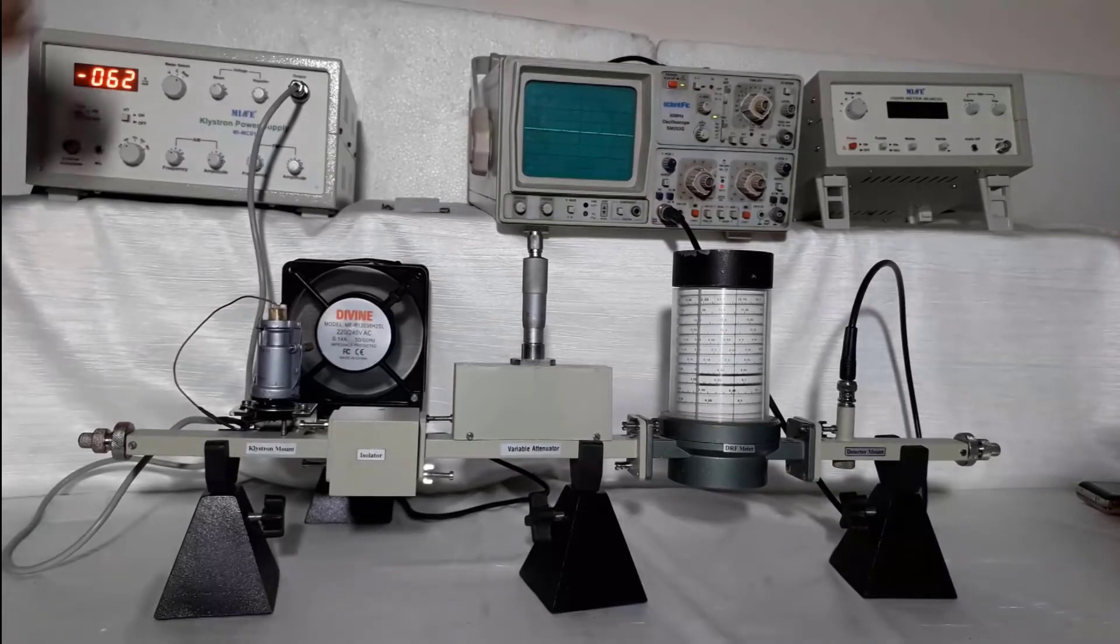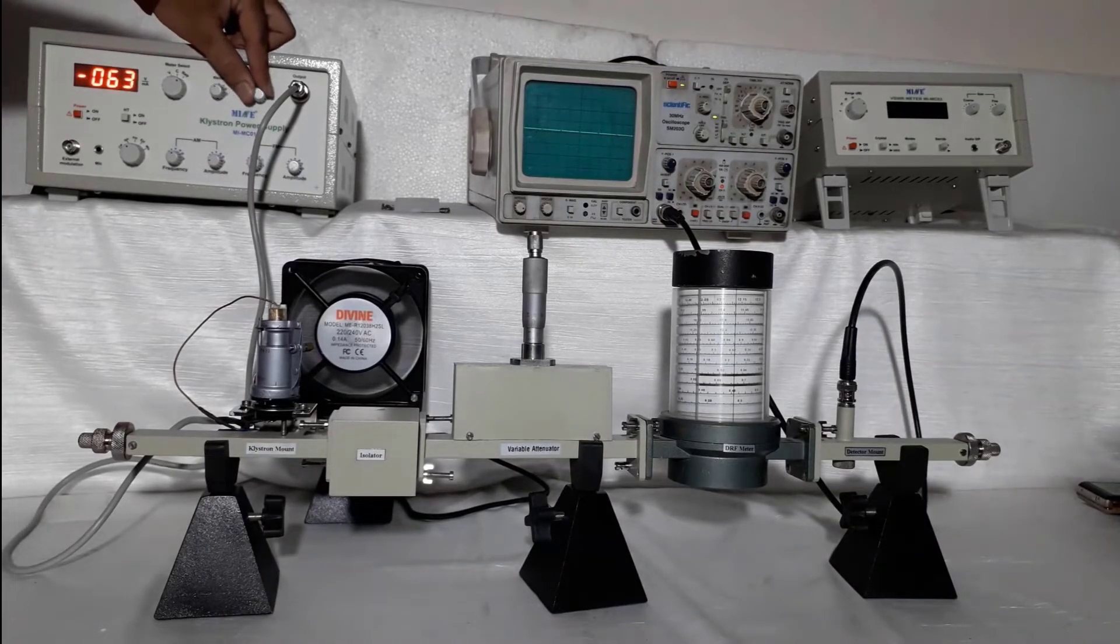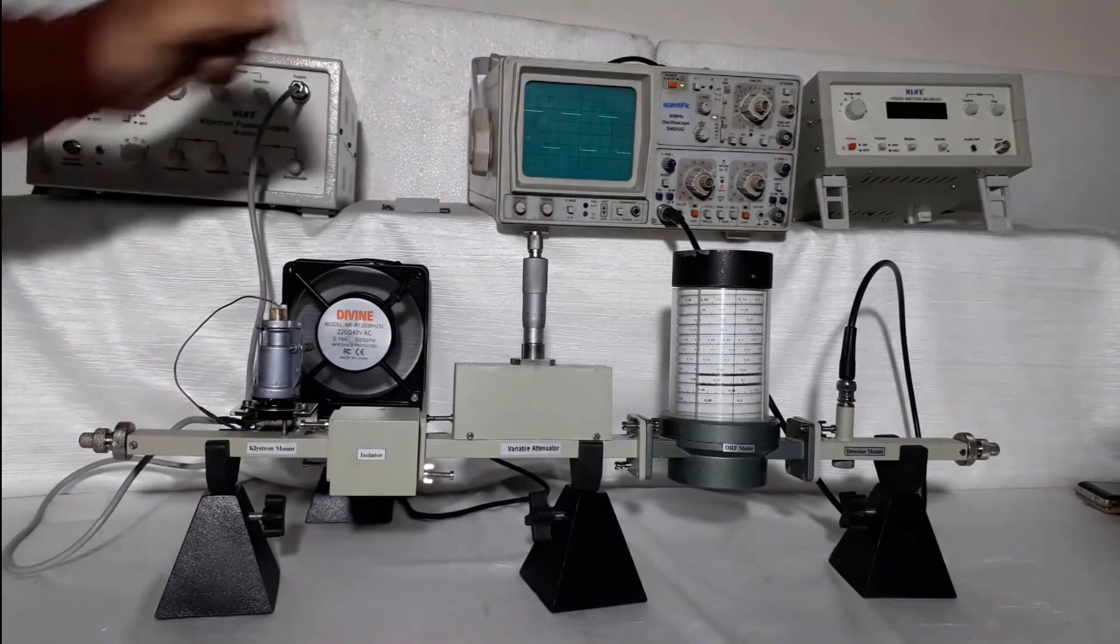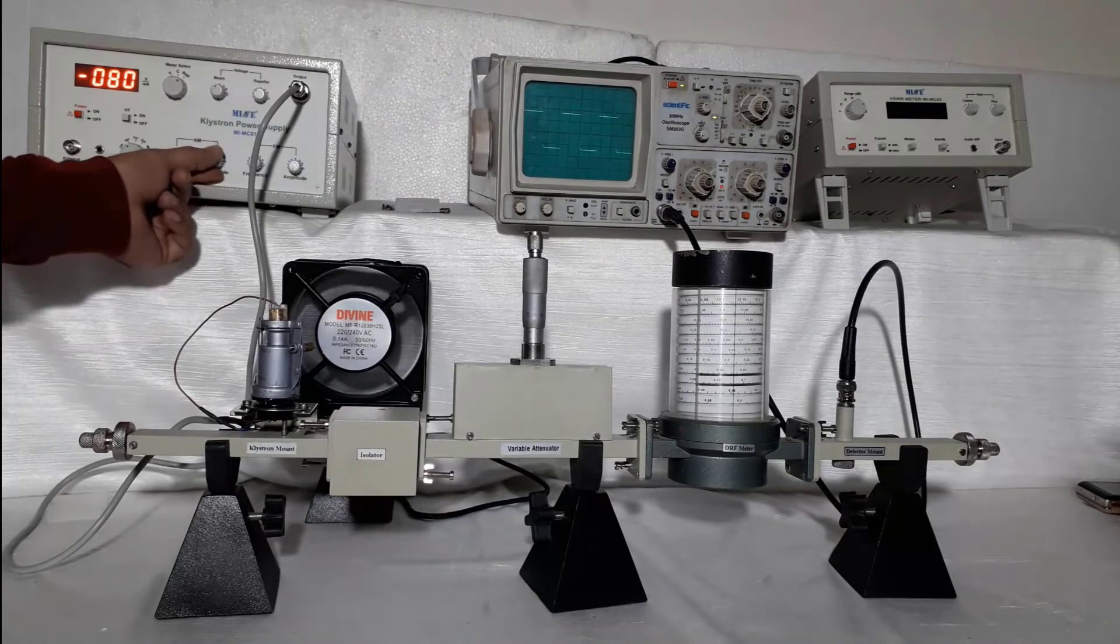Now choose any appropriate span where you get good amount of square waveform on CRO. Now by adjusting amplitude knob of AM, set square waveform output for maximum amplitude.